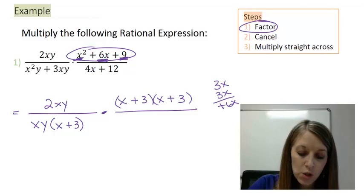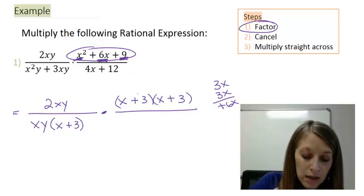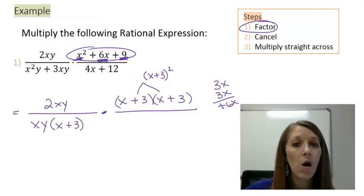Now, each of my individual parentheses are factored completely because I only have two terms, and neither one of them are squares nor cubes. But I really can condense this into x plus 3 quantity squared. Now, I might do that and I might not. It depends on what happens in the next step. And bear with me, I'll explain that in a minute.